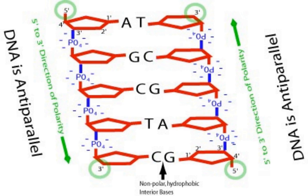Strictly speaking, the two strands of a double-stranded DNA molecule are reverse complementary to each other. Sequence features that are 5' to a particular reference point are commonly described as being upstream, while those that are 3' are described as being downstream.